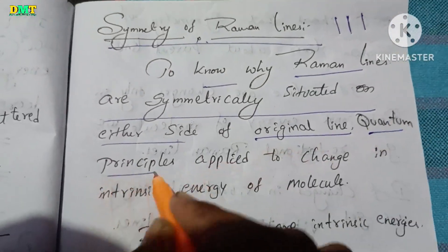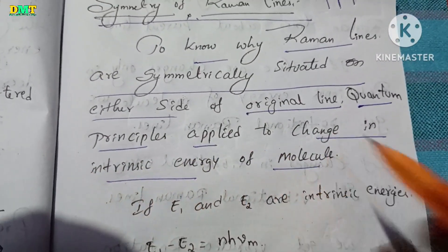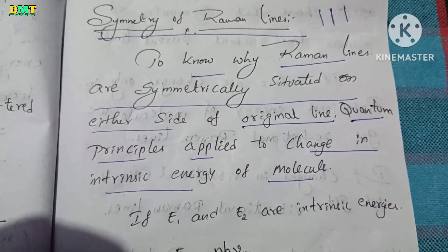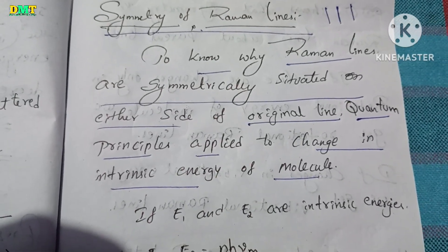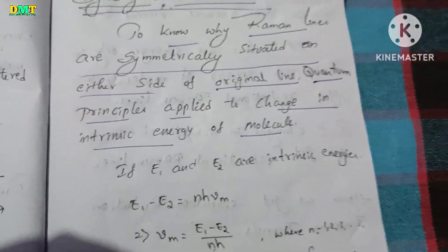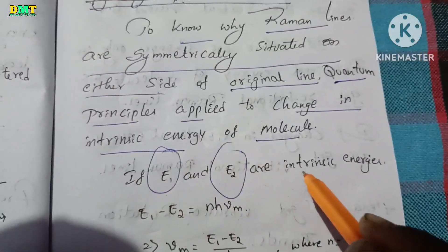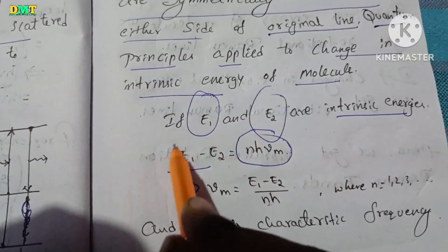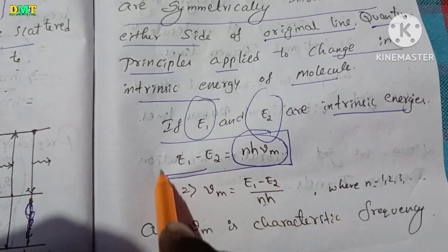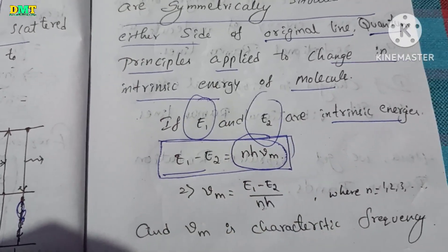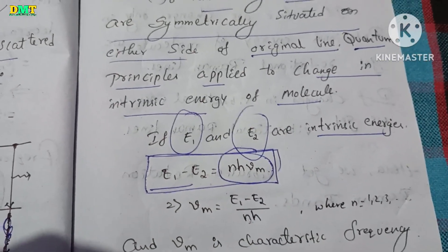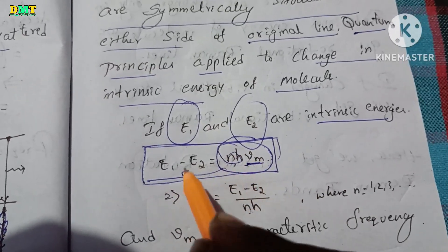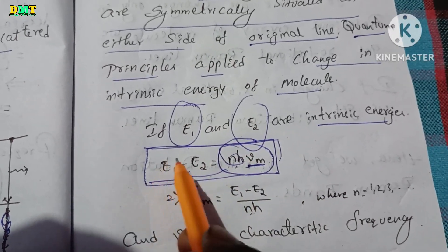Quantum principles apply to the change in intrinsic energy of a molecule. We apply quantum principles to E1 and E2. The energy difference E1 minus E2 equals n·H·mu_m. This is the condition, and from this we get E1 minus E2 by H equals n·mu_m.